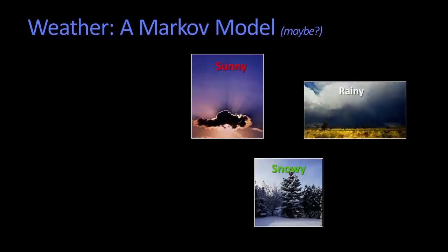And a Markov model says that we have to specify, for any given one of these, what's the likely next day going to be. So for example, suppose I tell you that if it's sunny today, there's an 80% chance that it'll be sunny tomorrow, 15% that it'll be rainy, 5% that it'll be snowy.